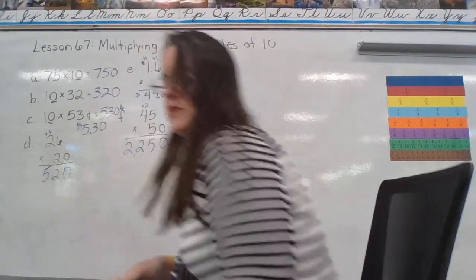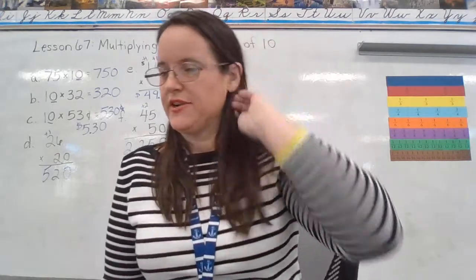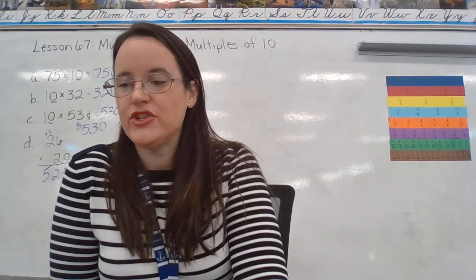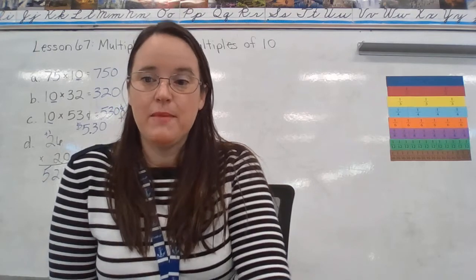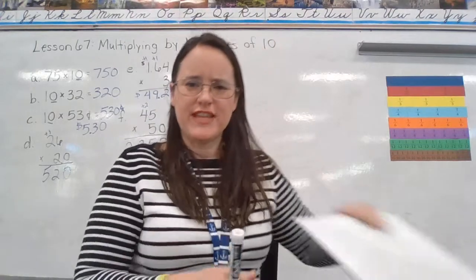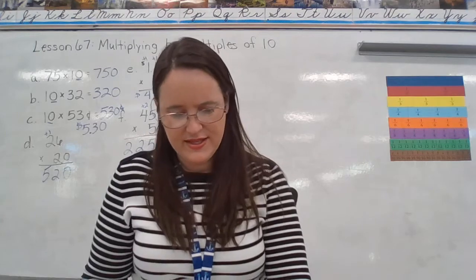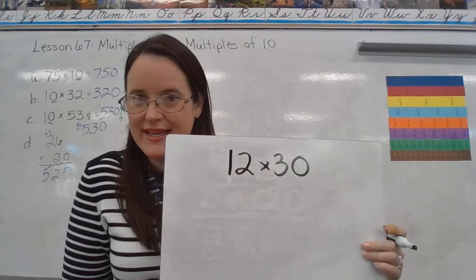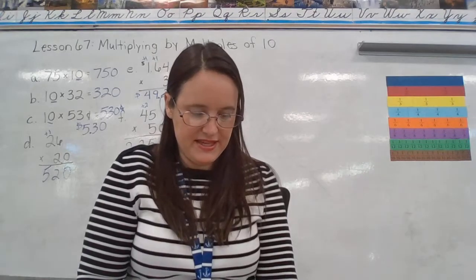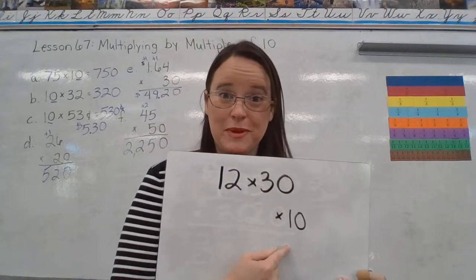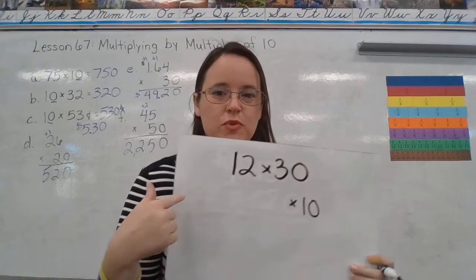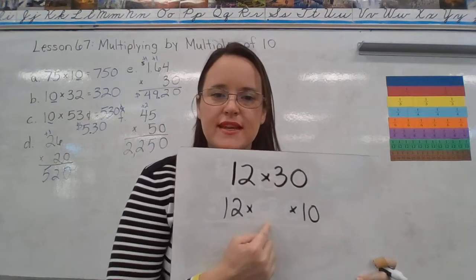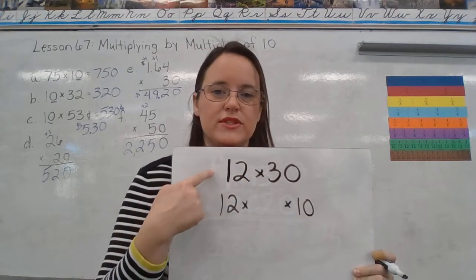There's one more problem. It's a word problem. Or not a word problem, but it gives you some directions here. It says, write 12 times 30 as a product of 10 and two other factors. Then multiply. So, once again, it says, write 12 times 30. So, we're going to start with writing that. It wants us to write this as a product of 10 times two other factors. So, it wants us to break something down so that we can have times 10. Do you remember this from the first example? Our 12 is going to stay the same. What goes in the middle there? What's that other factor that we need for this one to be equal to this one? We have 12. We have 10. What number times 10 is going to give me 30?